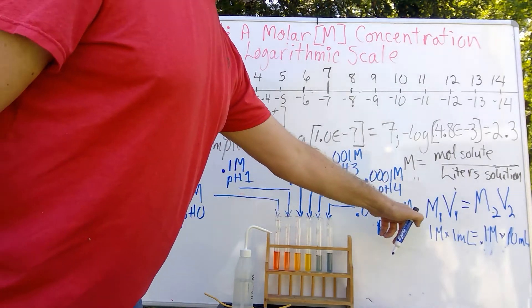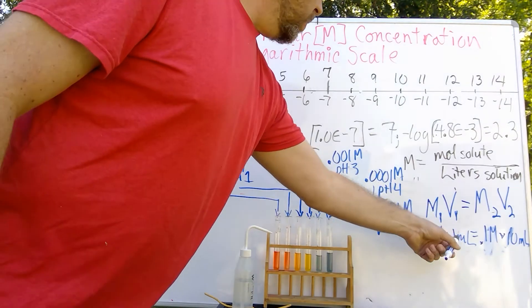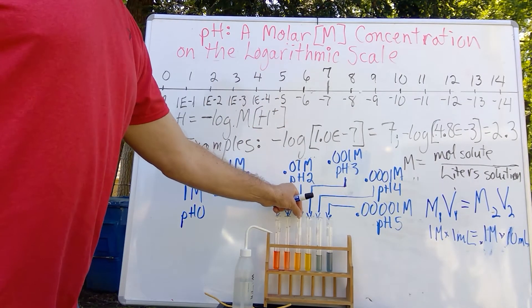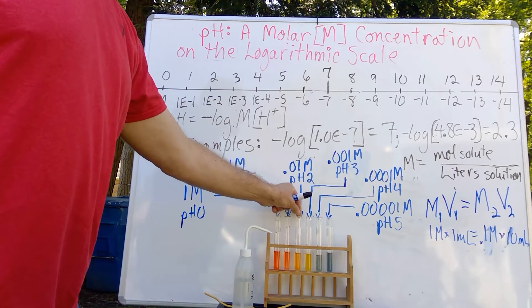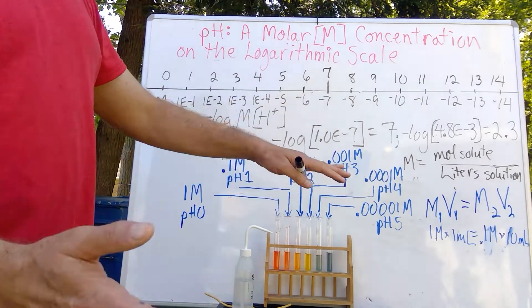And so I simply repeated this equation each time, taking 1 milliliter from the previous concentration, adding it to the next concentration, and diluting it the rest of the way with 9 milliliters of water.